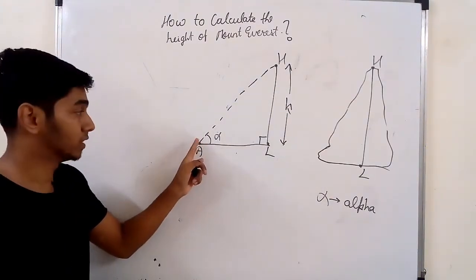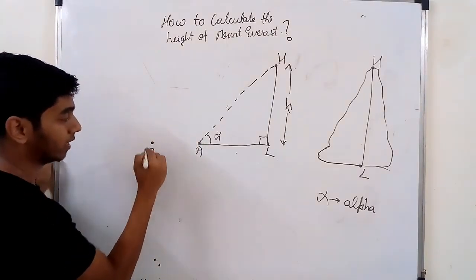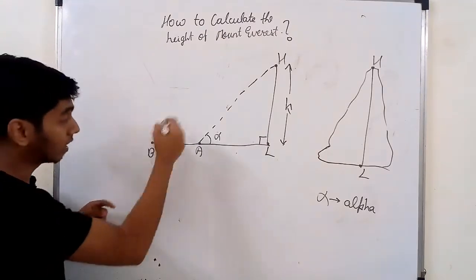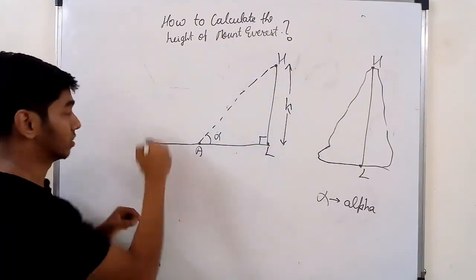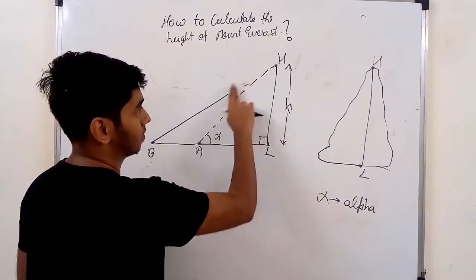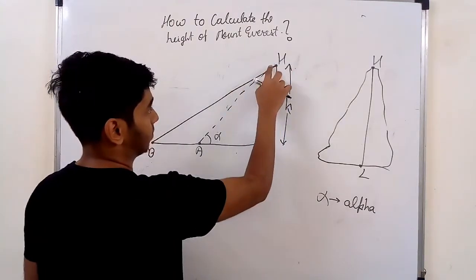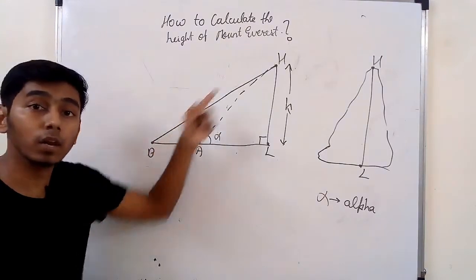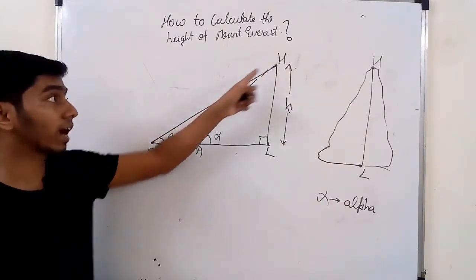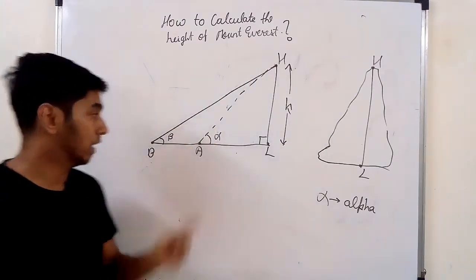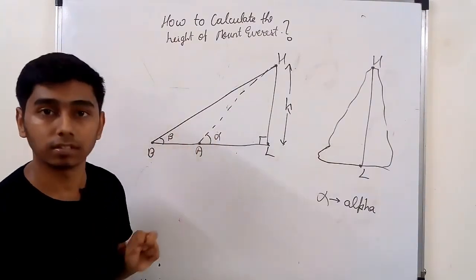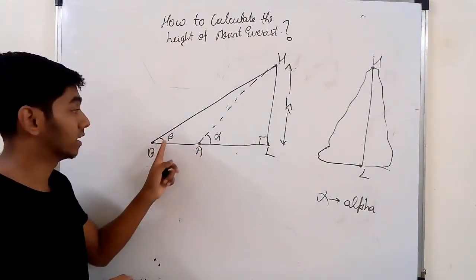Now this person, standing at point A, will move behind to point B. From point B, they will again look at the highest point of Mount Everest. Let this angle be beta — the angle with which they are looking at the topmost height of Everest. Both alpha and beta are angles of inclination because both are upwards. Alpha is at point A and beta is at point B.